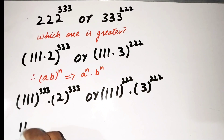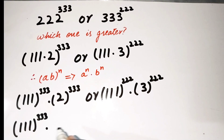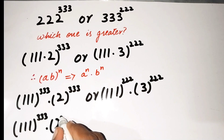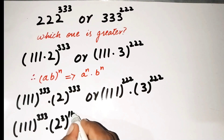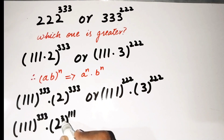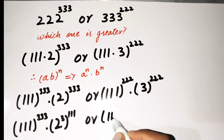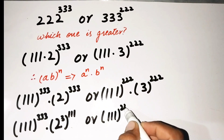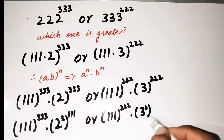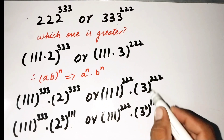In the next step, on the left side we have 111^333 times 2^3 raised to power 111. Of course, if we multiply 111 by 3 this becomes 333. On the other side we have 111^222 times 3^3 raised to power 111, since 111 multiplied by 2 becomes 222.